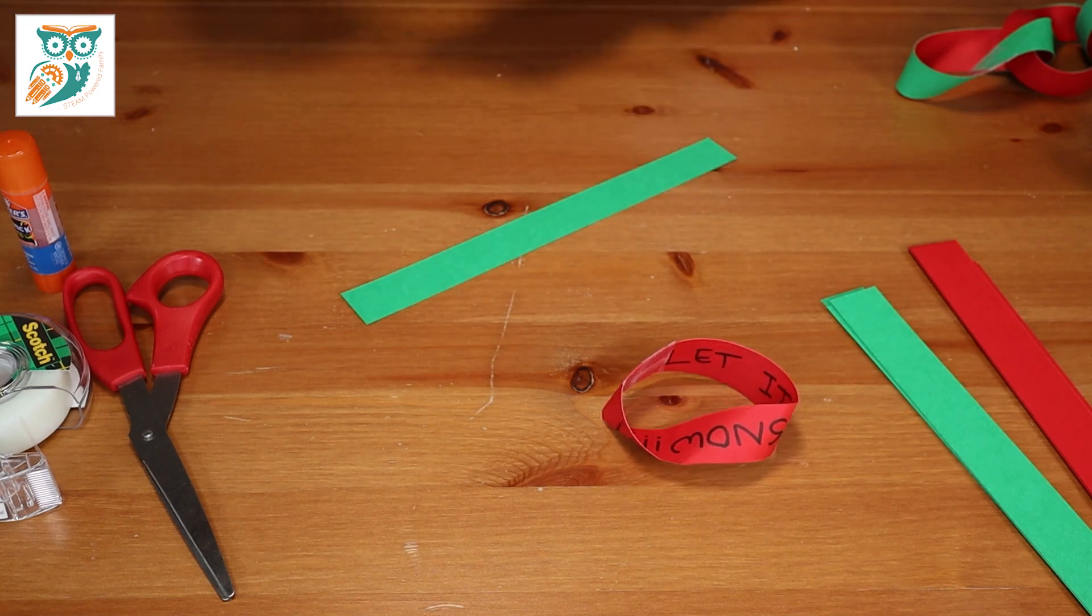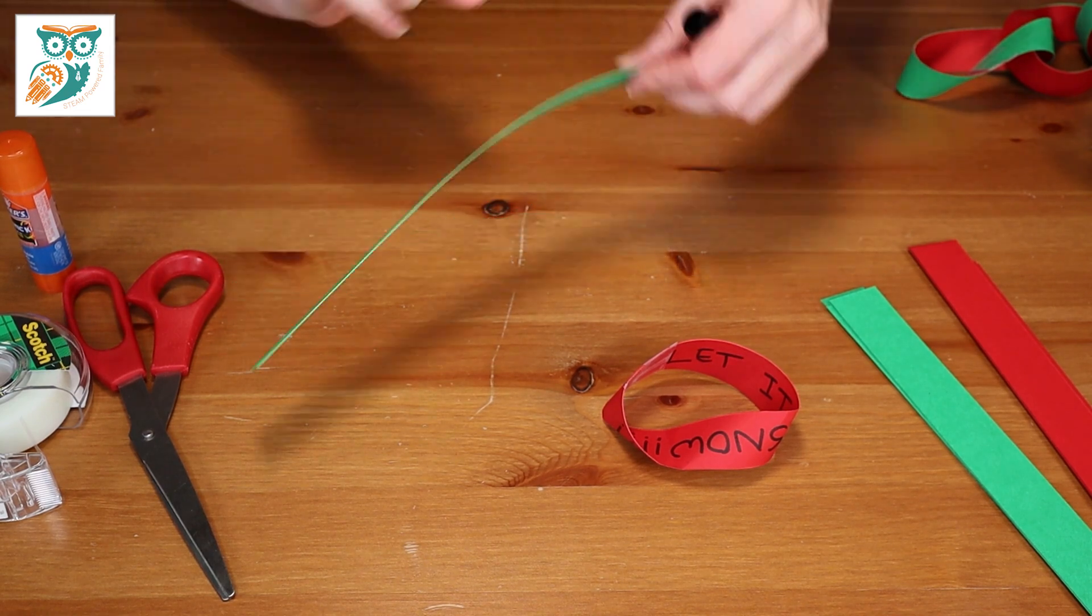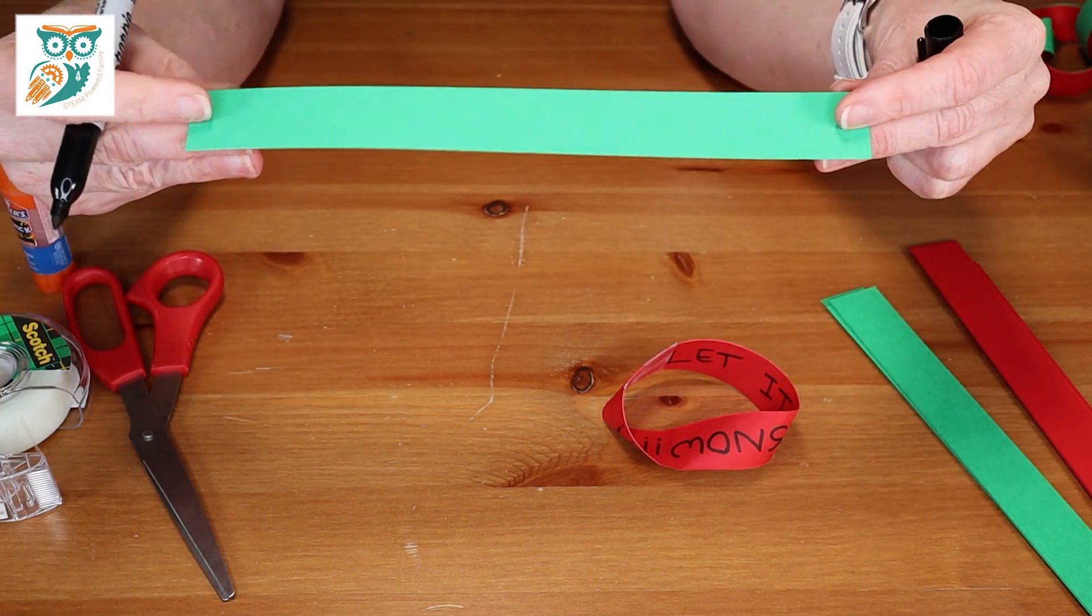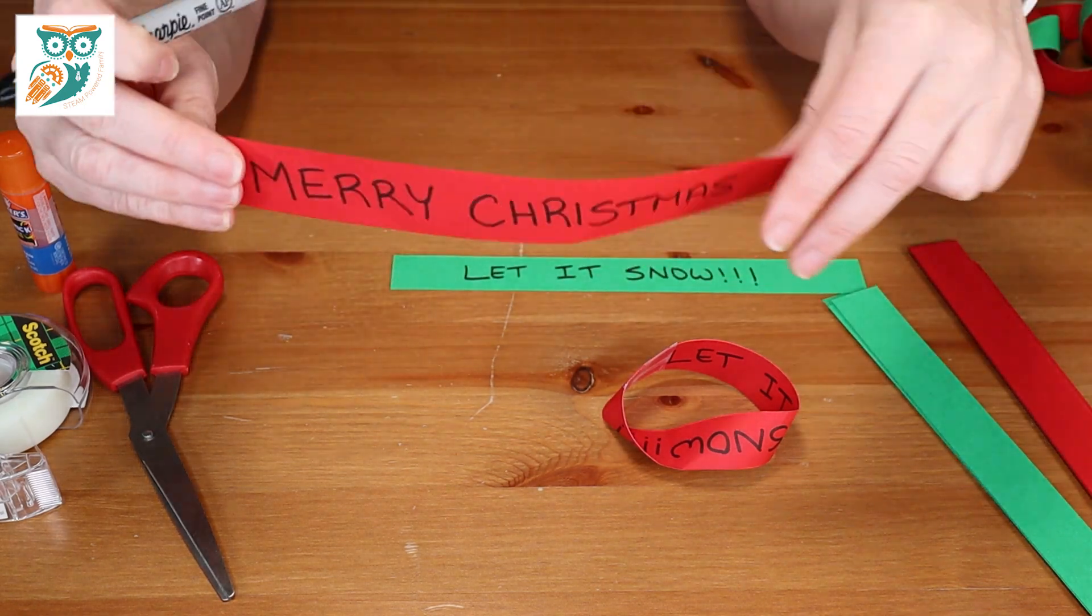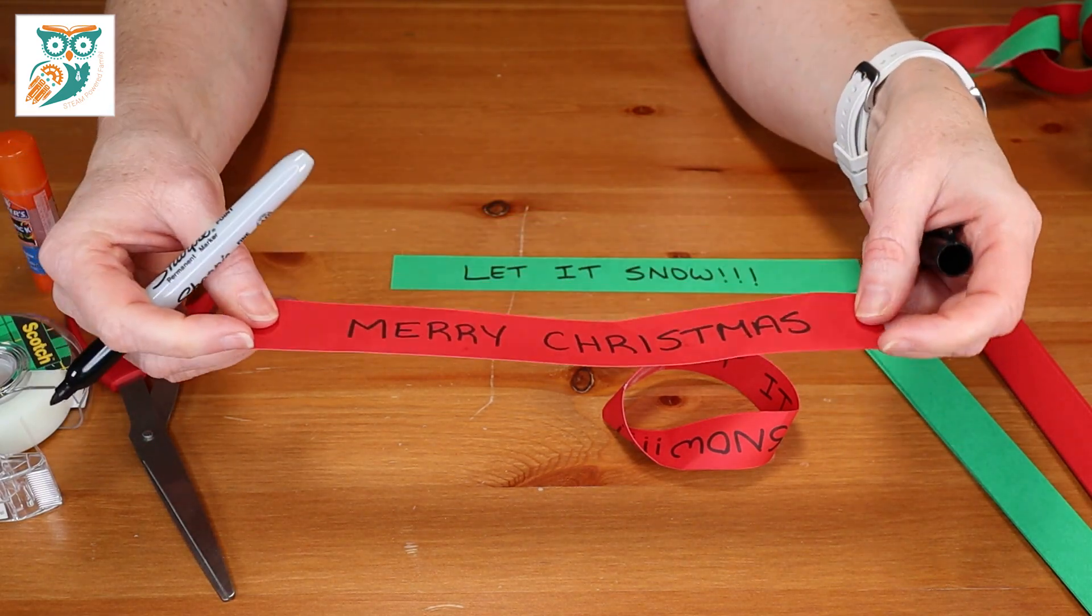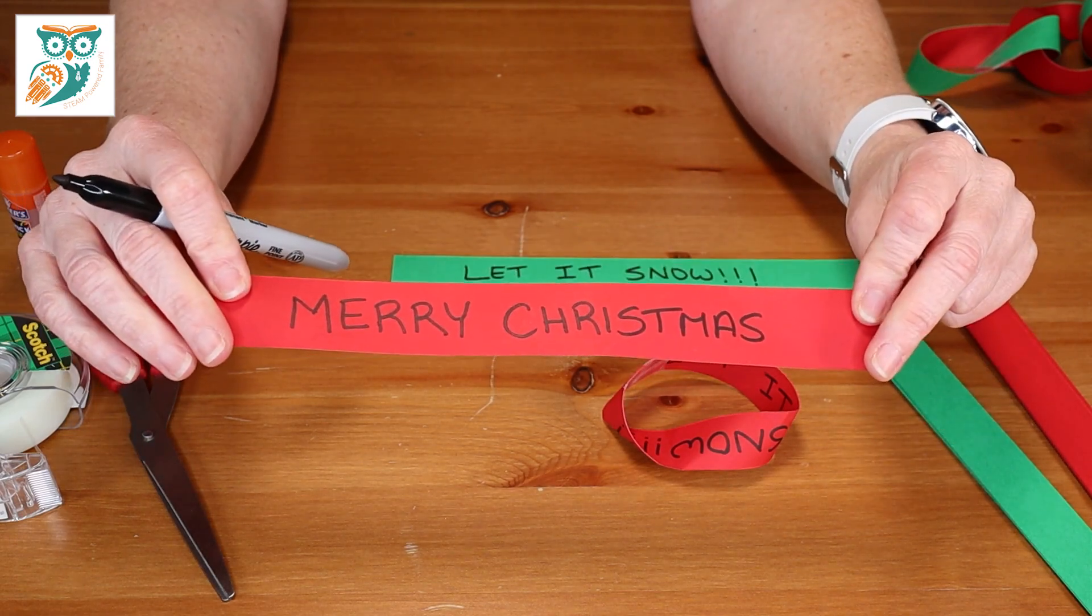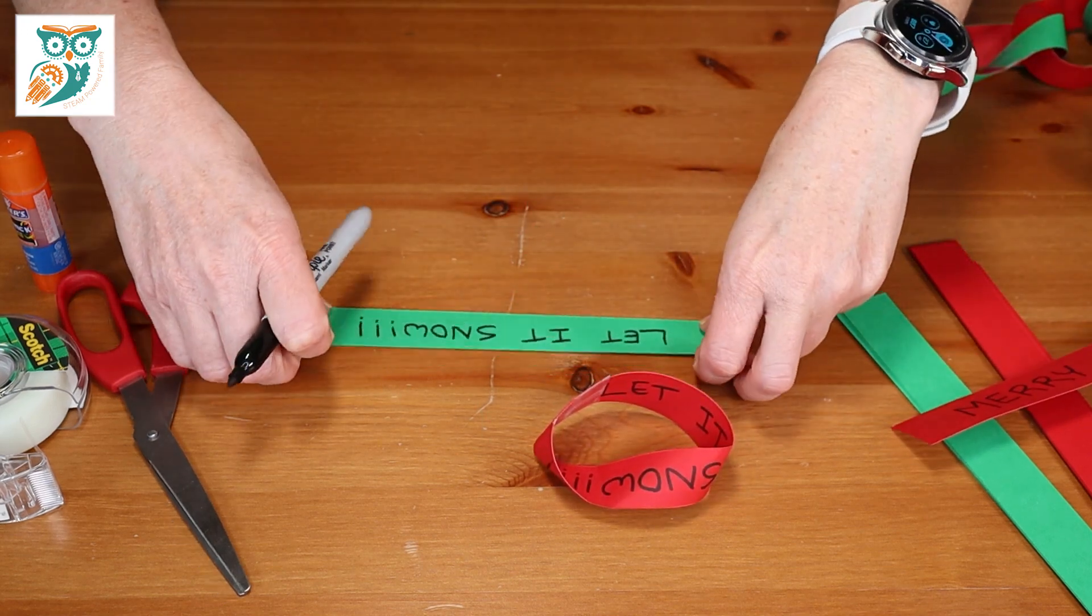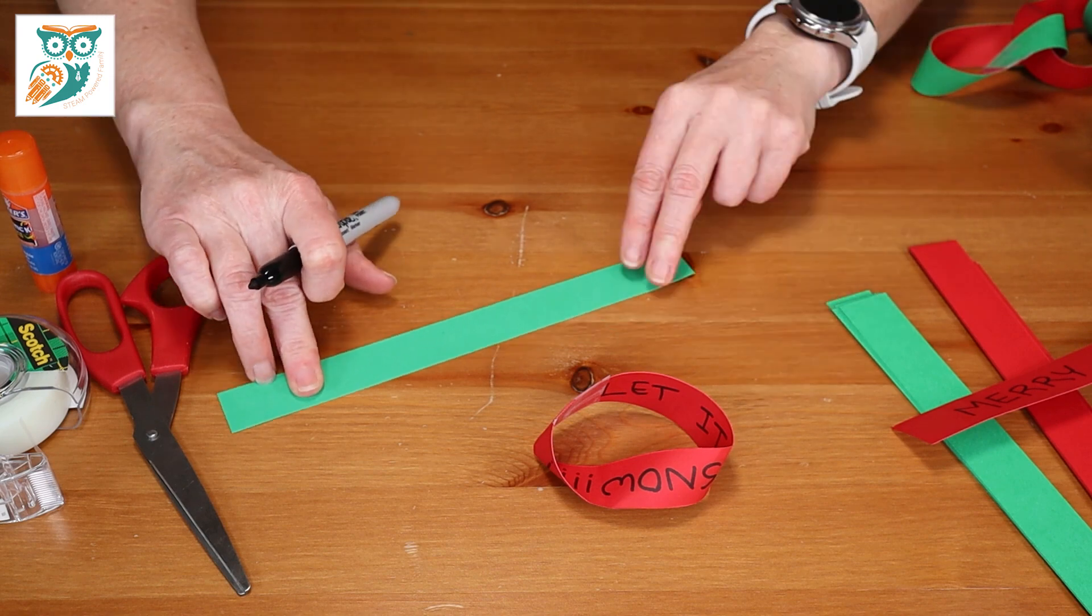So we're going to start by writing our message. Okay, so I've written my message. There. So now the important thing you want to do is you just want to flip so that... Hold on, how should I explain this? So here's one that I did. So it's Merry Christmas. Okay, so that's the way it needs to be. So your M is going to be on the same end, but it's going to be flipped upside down. Like that. Okay, so I'm going to take my paper. I'm going to flip it. So my let it snow. I'm going to write let it snow. Okay, does that make sense? Hopefully that does.